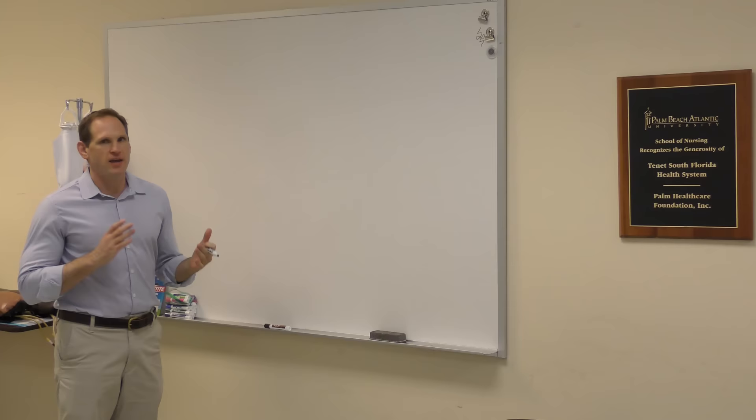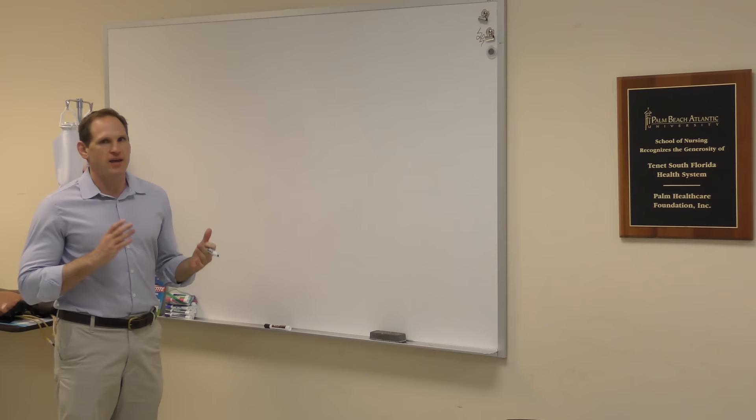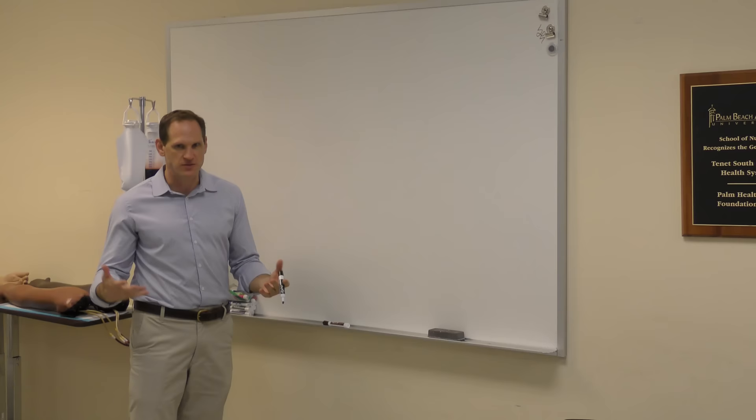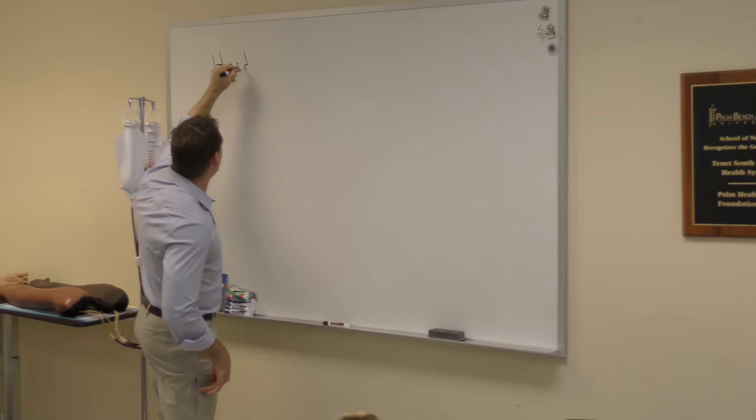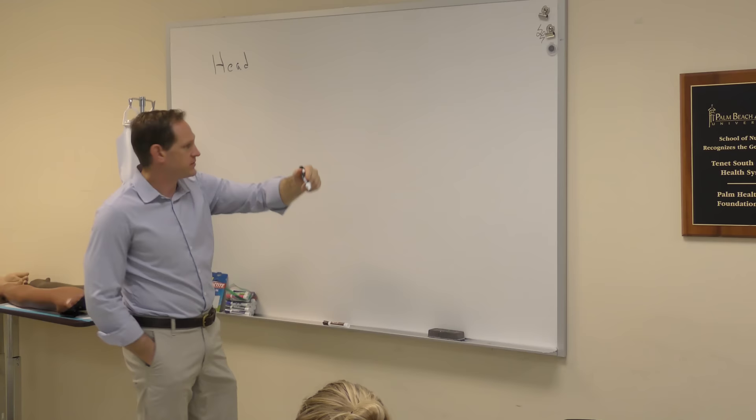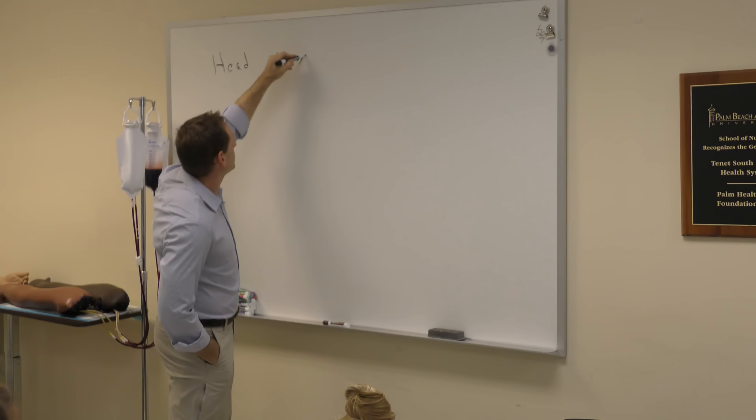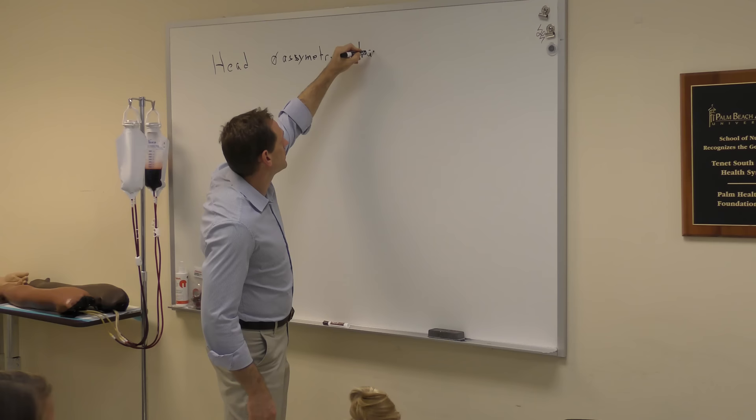The last thing we need to do is normal assessment documentation. Let's think about what we did during that head-to-toe assessment. For the head — what was the most important thing? We say no asymmetry and atraumatic. Those are the two most important things we were assessing for.